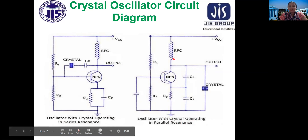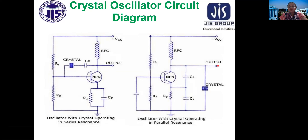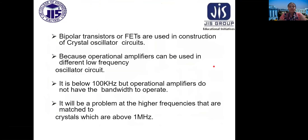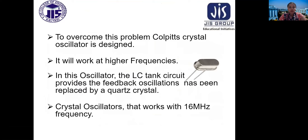A choke is connected and the output is taken from the common collector terminal. Bipolar transistors or FETs are used in the construction of crystal oscillator circuits because operational amplifiers can only be used in low frequency oscillator circuits below 100 kHz and do not have the bandwidth to operate at higher frequencies above 1 MHz. To overcome this problem, the Colpitts crystal oscillator is designed, which works at higher frequencies.